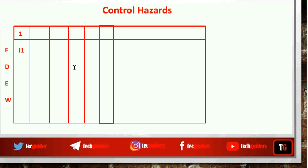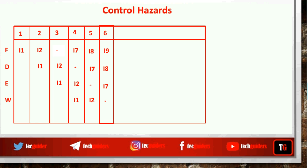Now suppose the target address is computed in stage 2 of the pipeline. In cycle 1 we fetch i1, in cycle 2 we decode i1 and fetch i2, in cycle 3 we execute i1, decode i2, and fetch i3. Once decoding of i2 is complete, it is realized the next instruction is i7, not i3. i3 must be flushed and i7 loaded in the next cycle. As a result, in cycle 6 no instruction is processed.